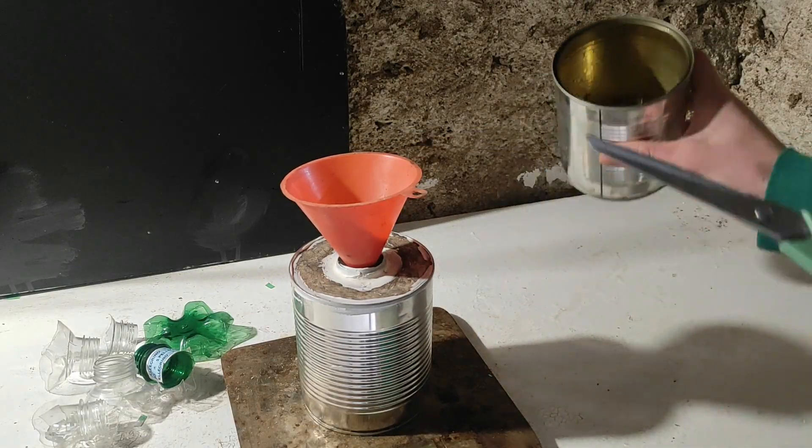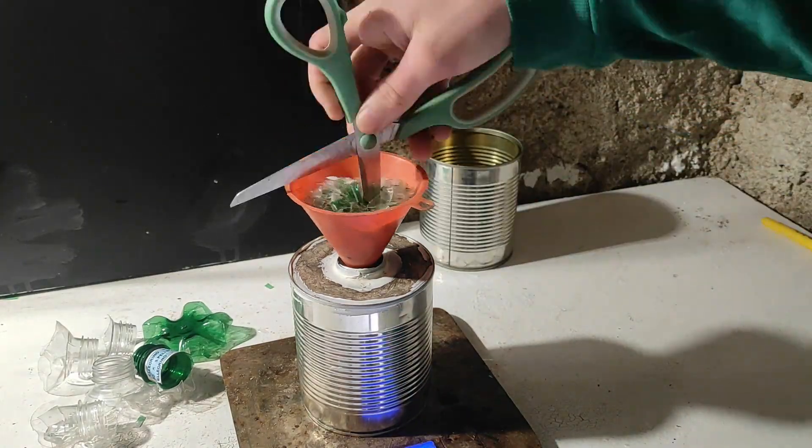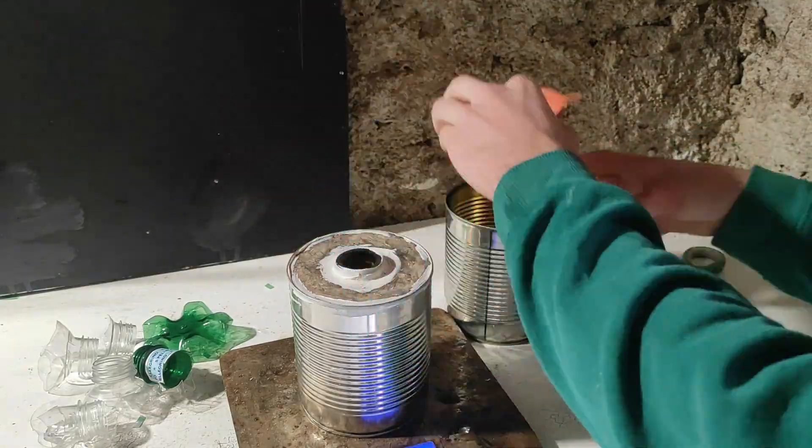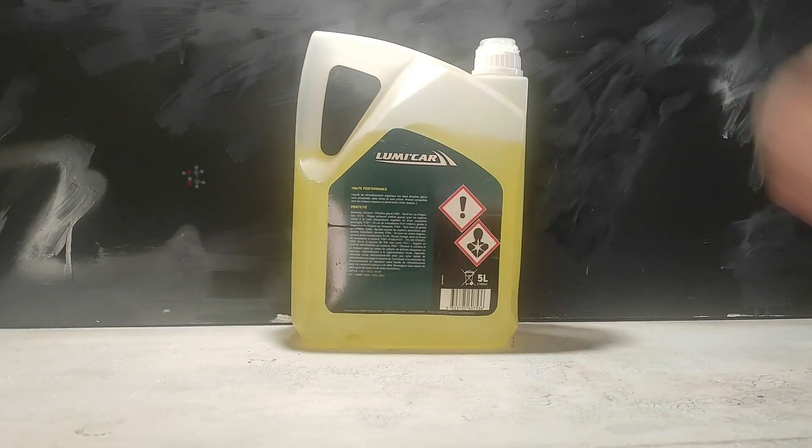When we have the PET gravel, we can pour it all inside a reaction can, and I made this one myself, but you can use a paint can as well. The next reagent we need is ethylene glycol.